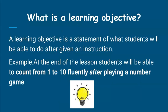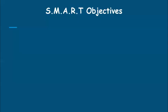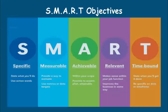So in writing objectives, we need to make sure that our objectives are SMART. SMART stands for S — specific, M — measurable, A — achievable, R — relevant, and T — time-bound.